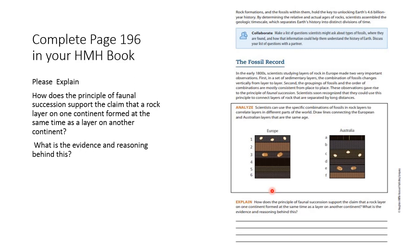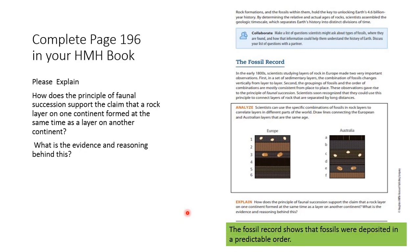Now you should have enough evidence to explain how the principle of faunal succession supports the claim that a rock layer on one continent formed at the same time as a layer on another continent. What is the evidence and reasoning behind this? Please respond to that and put it in your HMH book on page 196. To help get you started: the fossil record shows that fossils were deposited in a predictable order — that's the first piece you can write down. Then continue from there.